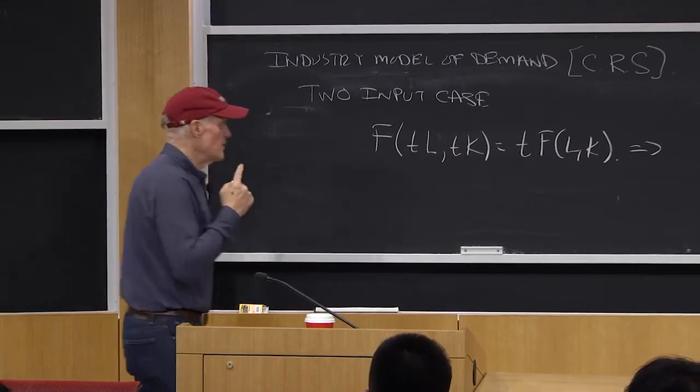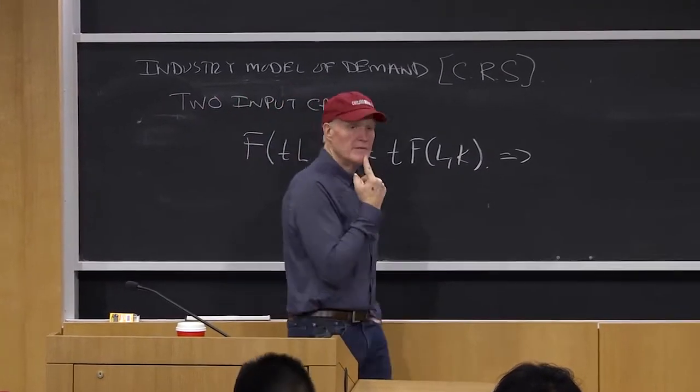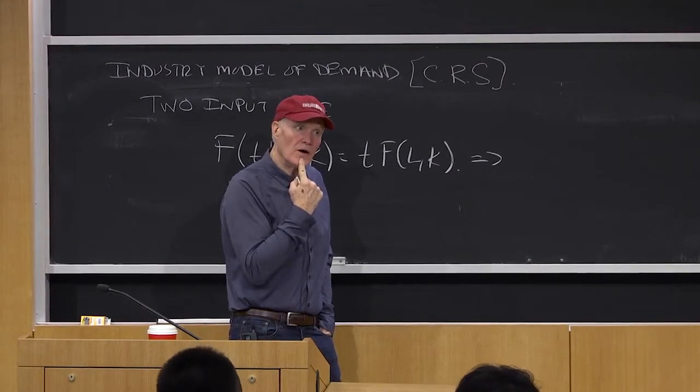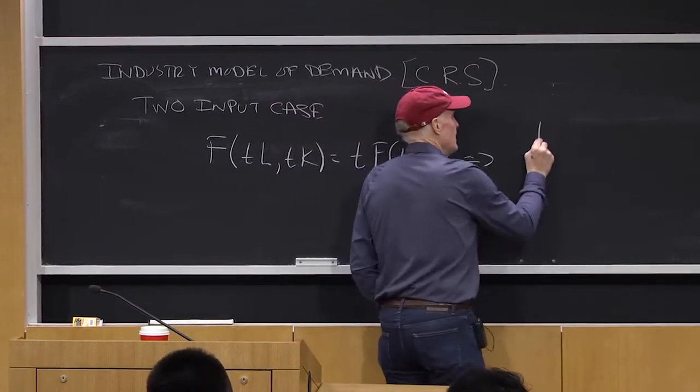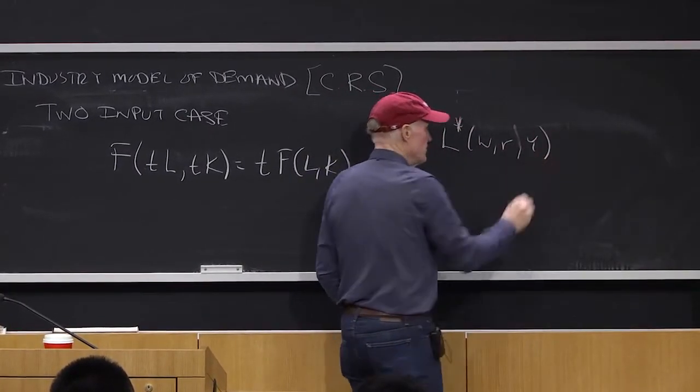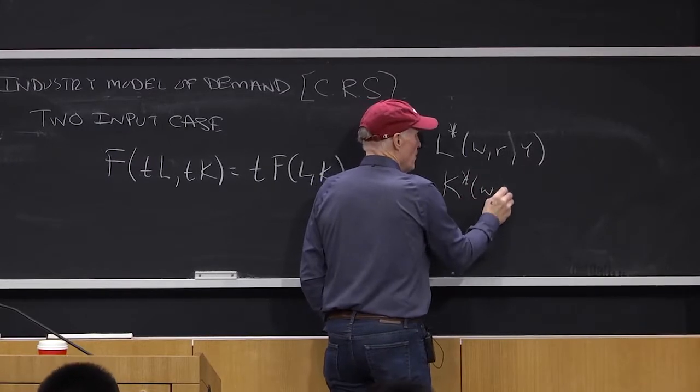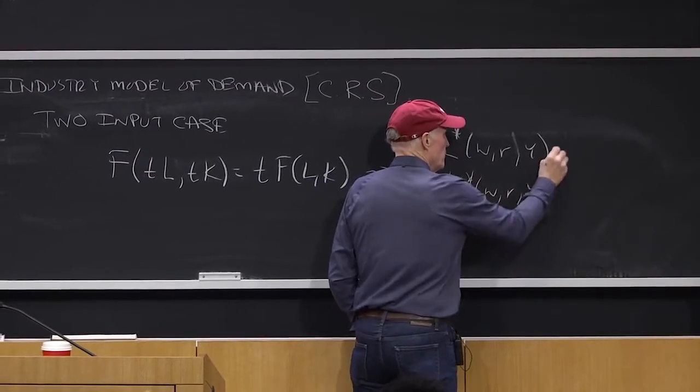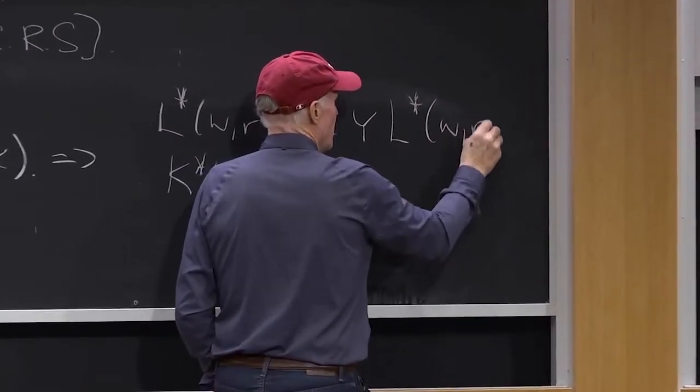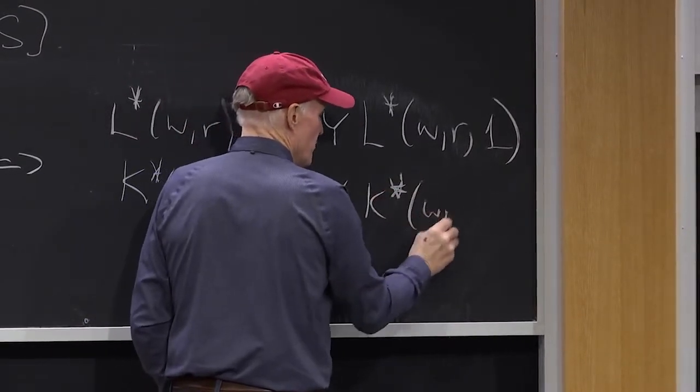Yeah. So a common feature might be that L star of W, R, and Y, this is our conditional factor demand curves, and K star of W, R, and Y would be something like Y times L star of W, R, and 1 equals Y times K star of W, R, and 1.